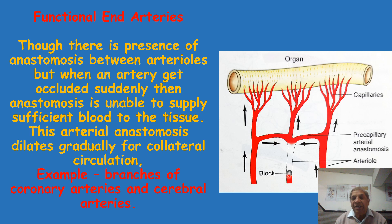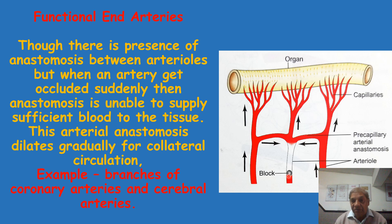Functional end arteries are present in two very important organs. First is the heart — the heart is supplied by the coronary arteries, and the branches of the coronary arteries at the arteriolar level are functional end arteries, meaning anastomosis is there but it is not sufficient. The second important organ is the brain — the cortical branches of the cerebral arteries supplying our brain are also functional end arteries.